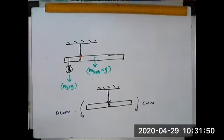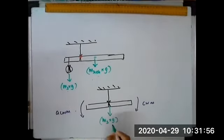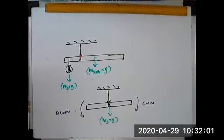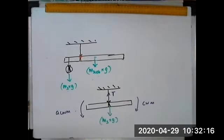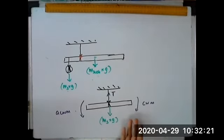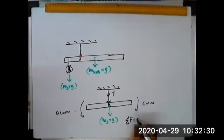You can say that the mass of the scale times G is acting downwards on this side, and there is a tension in the string which provides the support force. These two forces cancel each other out, and therefore there is no acceleration in the Y direction. And since there is no torque now on either side, there is a balance in the system — static equilibrium, sigma F equal to zero.